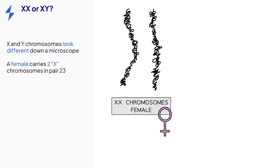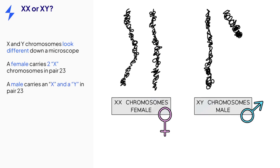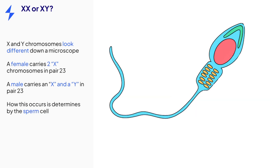Based on the appearance of the 23rd pair of chromosomes down a microscope, females have two X chromosomes, denoted as XX. Males have one X and one Y, denoted as XY. The Y chromosome is the smaller one. This happens according to the sperm cell that has fertilised the egg. Do remember that XX is used to show a female and XY is used for a male.